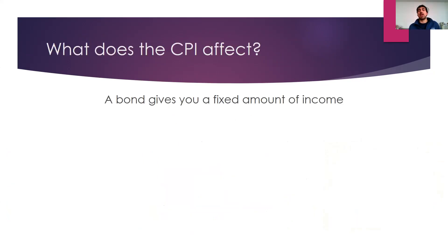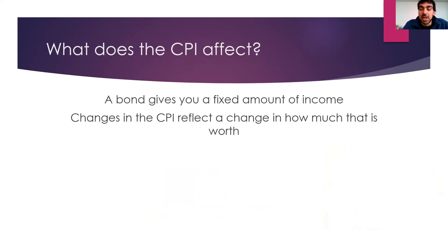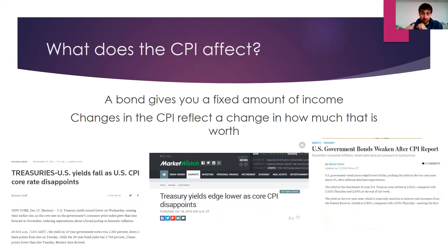So what does the CPI affect in terms of the financial markets? Why is it something we should care about? If you think about buying a bond, that bond gives you a fixed amount of income for a certain amount of time. Changes in the CPI directly affect how much you can actually buy with that money, and therefore directly affect the actual value of the bond. This type of fixed income is directly affected by the CPI — a higher CPI inversely causes bonds to be valued at less, and changes the markets as a result.